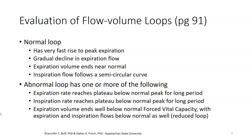Abnormal loops can have expiration rates that level out below what is a typical peak. Similarly, there could be a leveling out of the inspiration rate below what is a typical peak. And finally, you could have a lower-than-usual forced vital capacity volume, which basically gives you a smaller-looking loop compared to a typical loop.